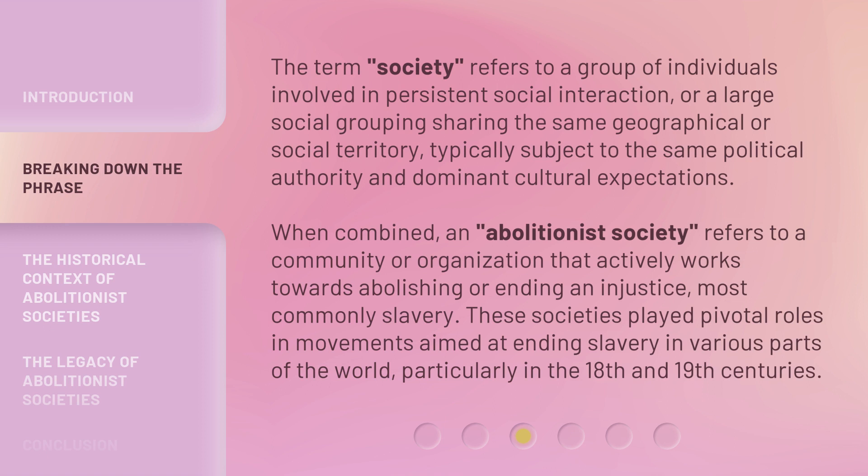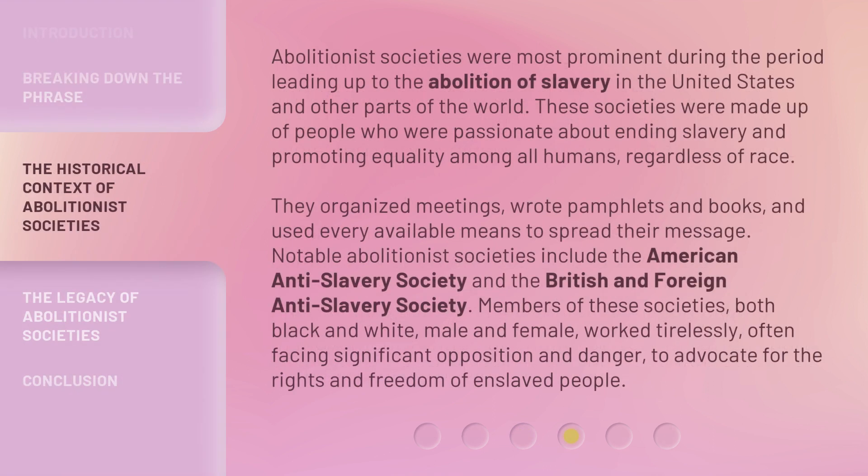These societies played pivotal roles in movements aimed at ending slavery in various parts of the world, particularly in the 18th and 19th centuries. Abolitionist societies were most prominent during the period leading up to the abolition of slavery in the United States and other parts of the world. These societies were made up of people who were passionate about ending slavery and promoting equality among all humans, regardless of race.